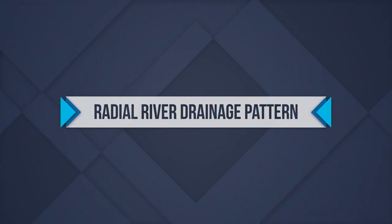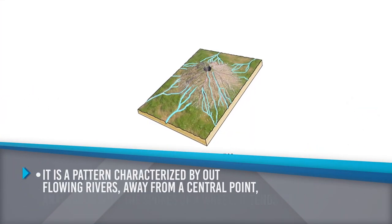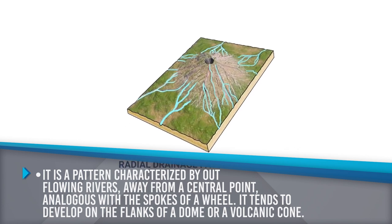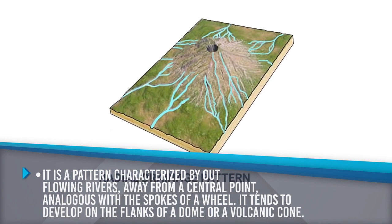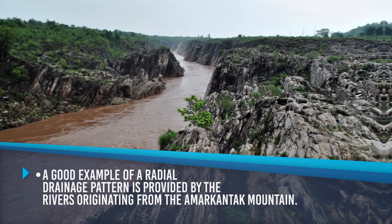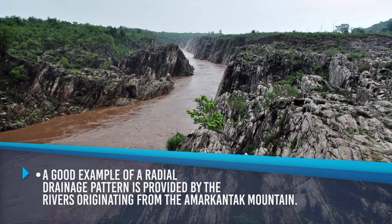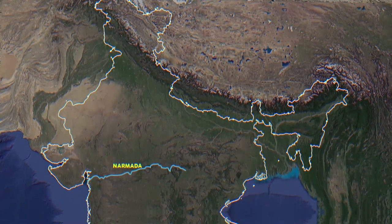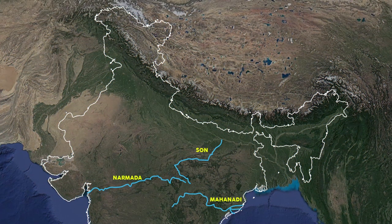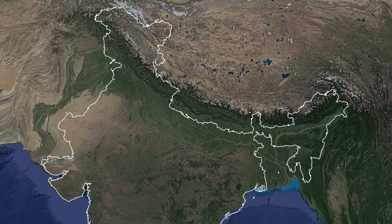Radial River Drainage Pattern: This pattern is characterized by rivers flowing outward away from a central point, analogous to the spokes of a wheel. It tends to develop on the flank of a dome or volcanic cone. A good example is provided by rivers originating from the Amarkantak mountain — Narmada, Son, and Mahanadi — flowing in different directions. This pattern is also found in the Girnar Hills of Gujarat and Mikir Hills of Assam.